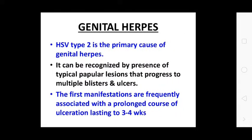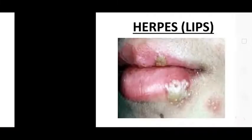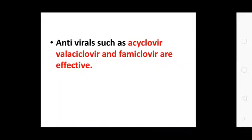Genital Herpes: HSV type 2 is the primary cause of genital herpes. It can be recognized by the presence of typical papular lesions that progress to multiple blisters and ulcers. The first episode is frequently associated with a prolonged course of ulceration lasting three to four weeks. Antiviral drugs such as aciclovir and famciclovir are effective.